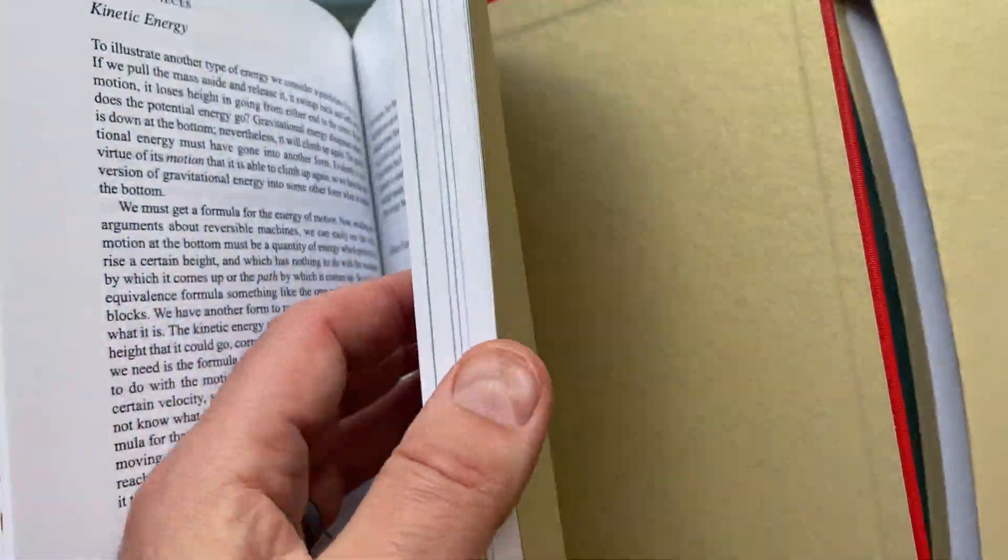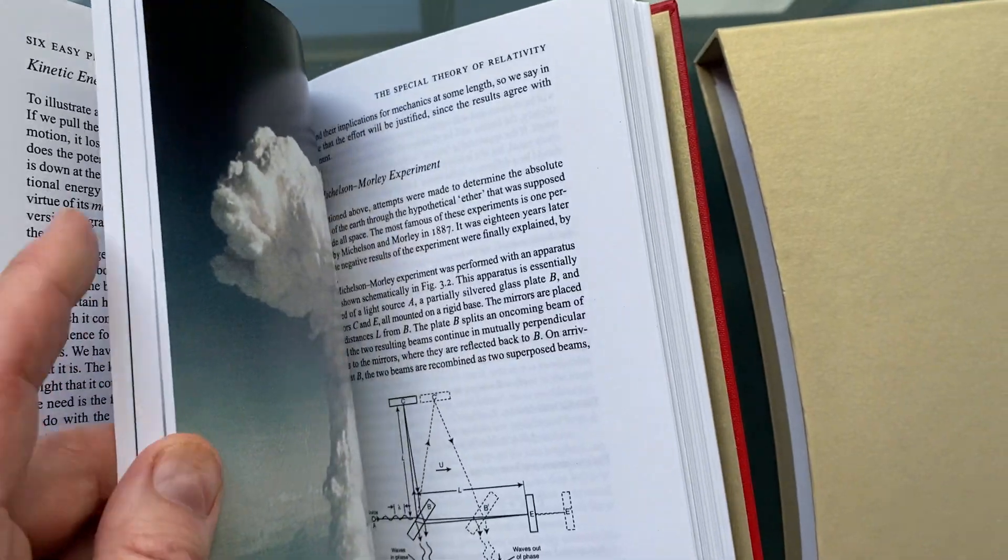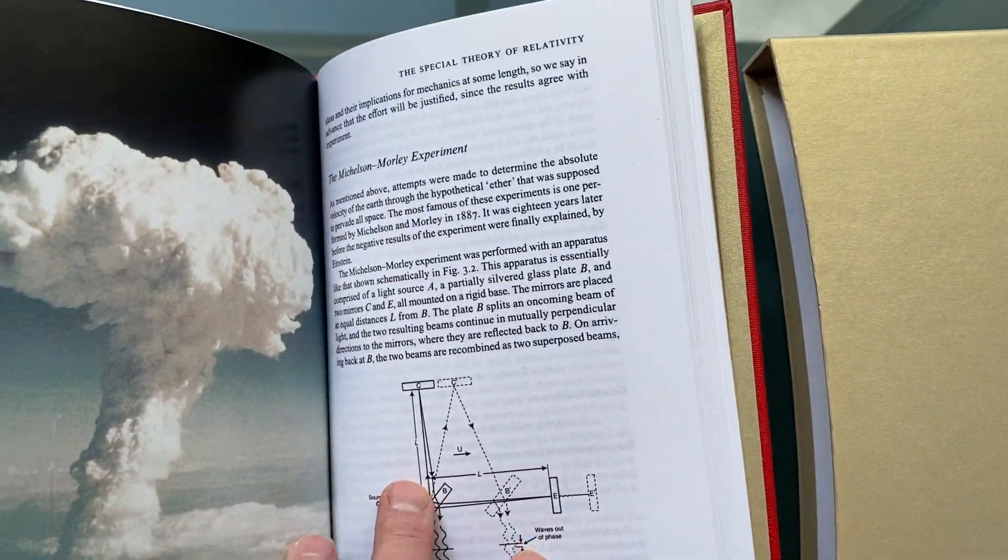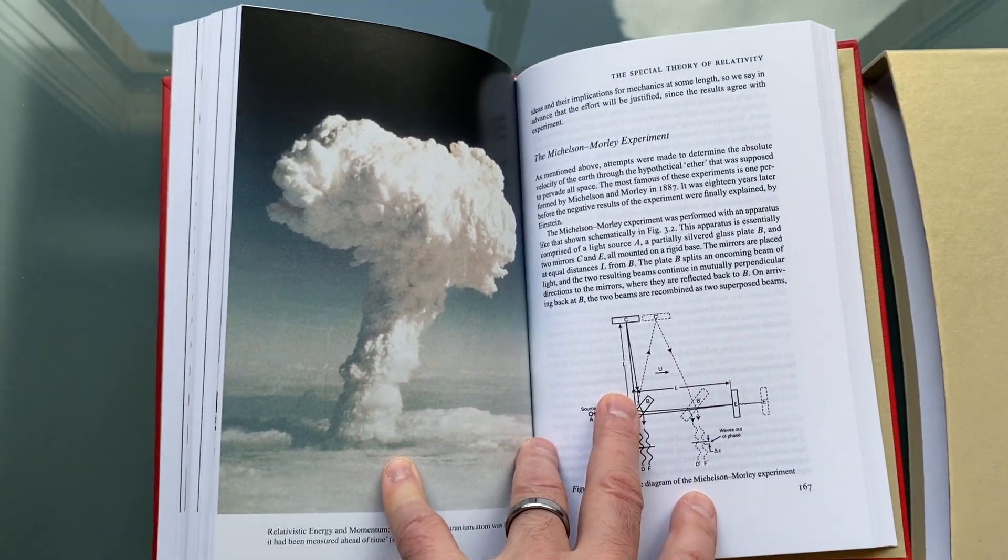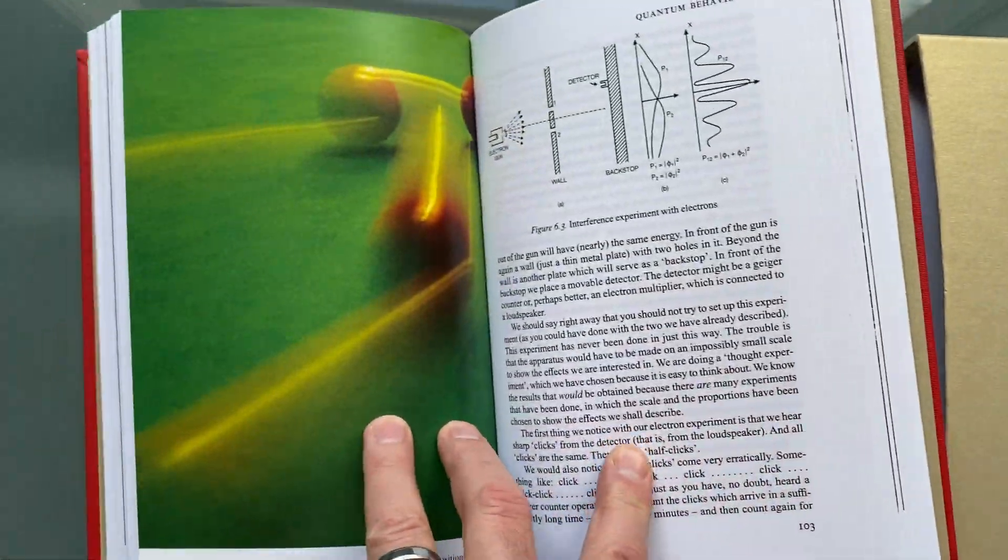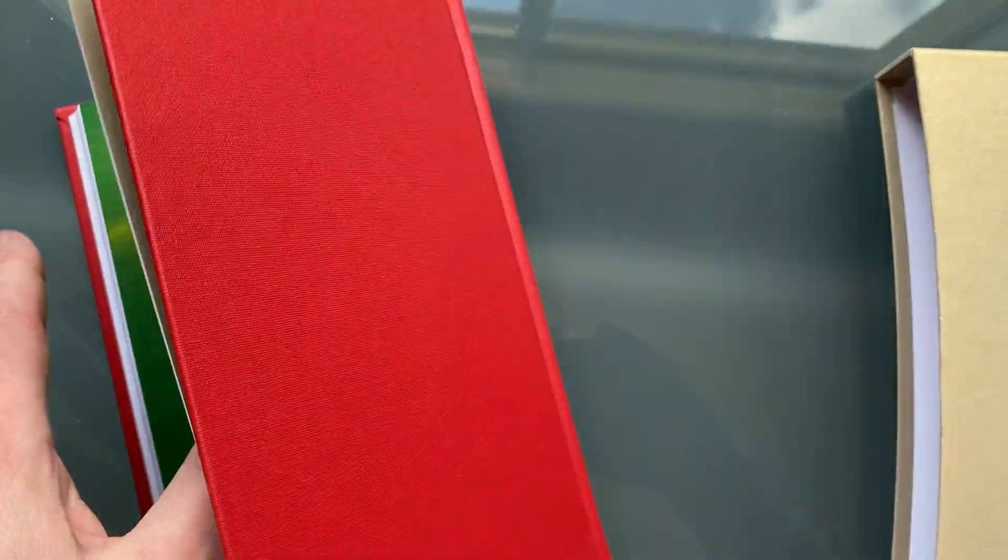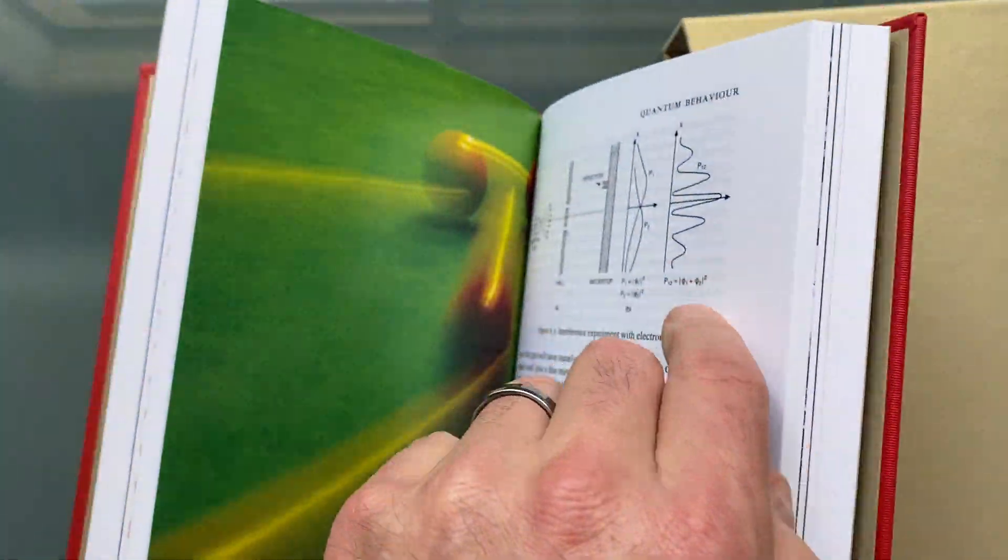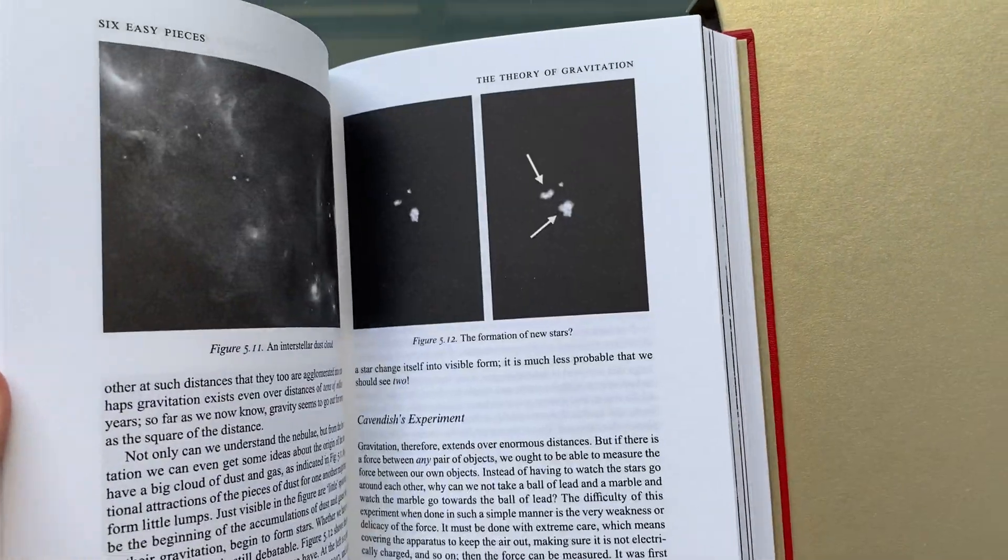And then later into a separate book called Six Not-So-Easy Pieces. These are a play, of course, on music, like Six Easy Pieces is a musical piece or musical collection of pieces. And he's done them as essays or chapters on physics.